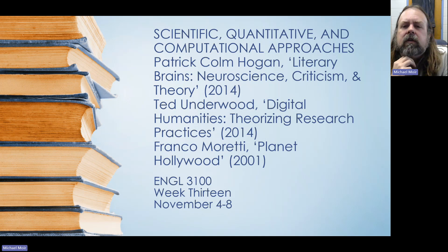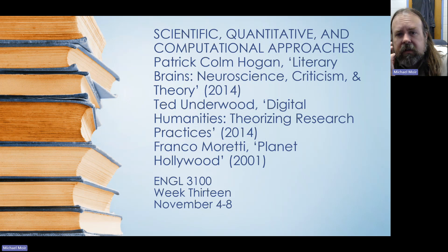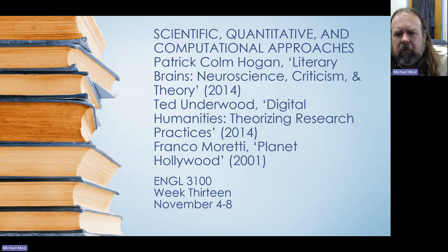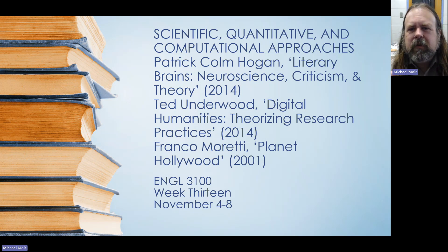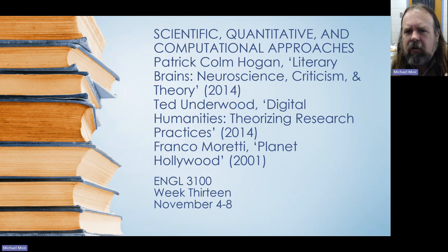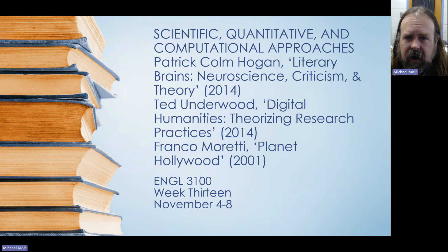We're going to be looking at two essays published in 2014: Patrick Colm Hogan's "Literary Brains: Neuroscience, Criticism, and Theory," and Ted Underwood's "Digital Humanities: Theorizing Research Practices." And a slightly older essay from 2001 by Franco Moretti called "Planet Hollywood," which really encapsulates the way we can use quantitative data and machine learning to aggregate large amounts of data to help us identify broad trends in literature and culture.